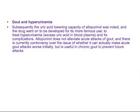The uses are gout and hyperuricemia. Subsequently, the uric acid-lowering capacity of allopurinol was noted and the drug went on to be developed for its more famous use — to treat hyperuricemia and its complications. Allopurinol does not alleviate acute attacks of gout. This is a very important point: allopurinol is not for acute gout. If a patient comes to your clinic with sudden pain of gout, do not give allopurinol. There is currently controversy over whether it can actually make acute gout attacks worse, but it is useful in chronic gout to prevent future attacks.